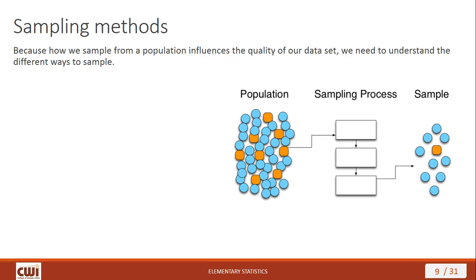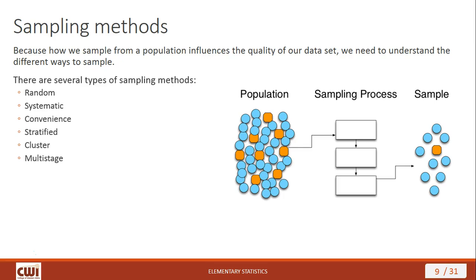Now let's talk about sampling methods. We know we're going to take a sample, take data from that sample, and use it to make inferences and conclusions about the whole population. We need to sample the population in such a way that the portion we take has characteristics similar to the population as a whole. Among the several types of sampling methods, we have random, systematic, convenience, stratified, cluster, and multi-stage methods of sampling.